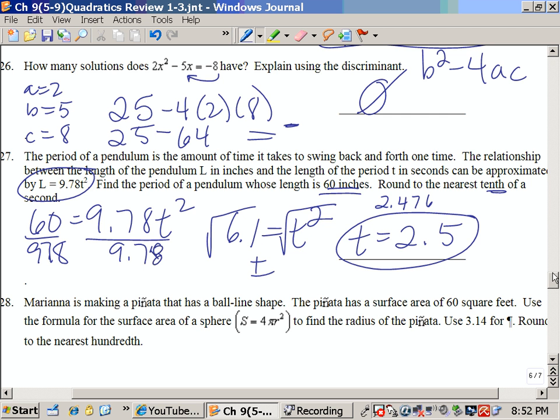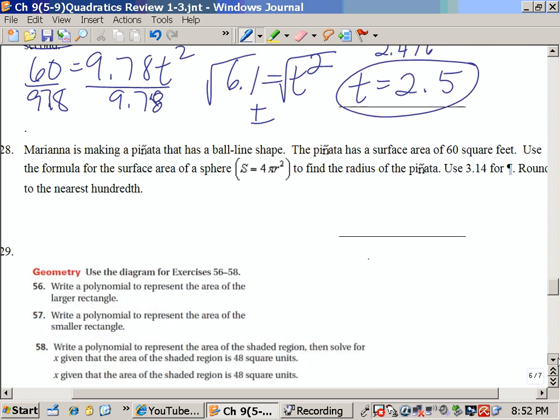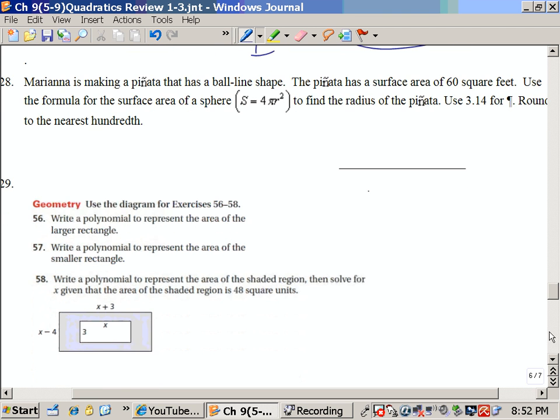Number 28 is very similar to that last problem. All we have to do is take the formula that they give us, s equals 4πr squared. We're going to use 3.14 for pi, and it already gives us a surface area of 60. So that's 60 equals 4 times 3.14 r squared. Go ahead and multiply the 4 times 3.14, and that is 12.56.